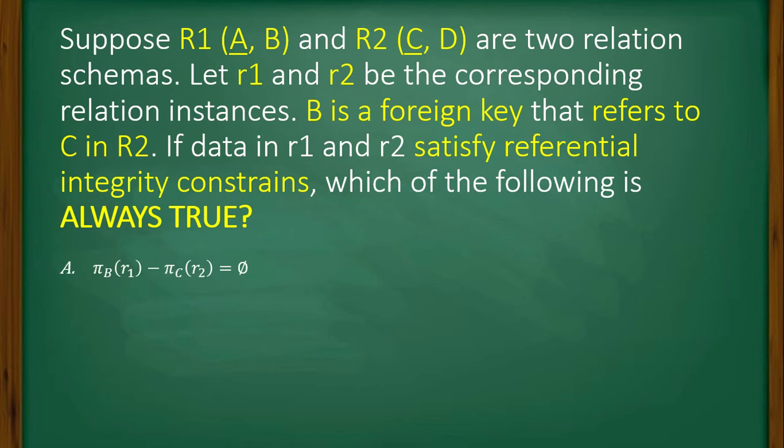Option A: Pi subscript B of r1 minus Pi subscript C of r2 equals empty set. Option B: Pi subscript C of r2 minus Pi subscript B of r1 equals empty set.